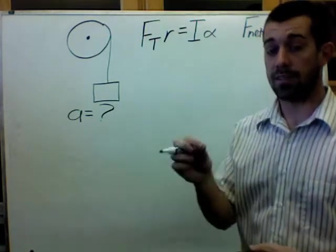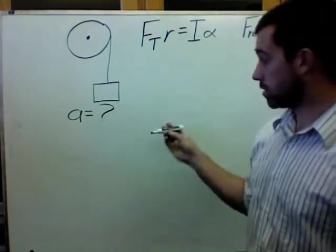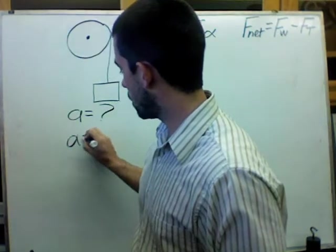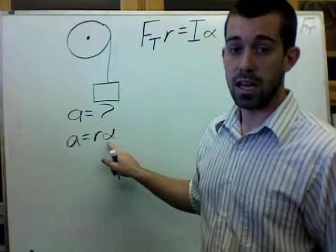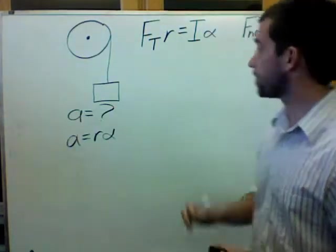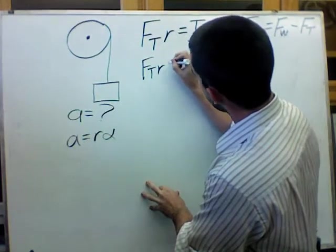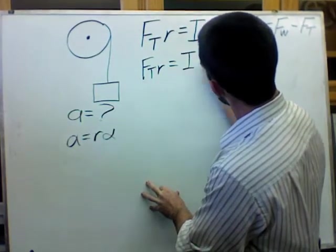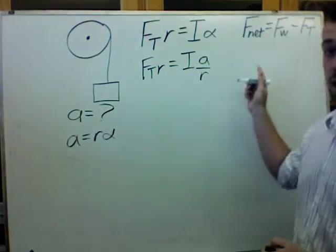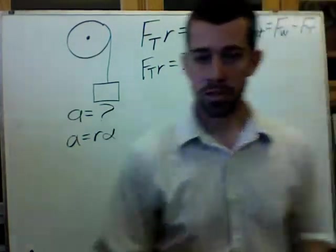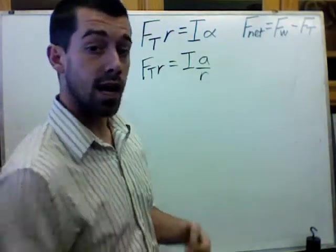And so both of these equations are actually related to acceleration, but I need to take a step before I have acceleration in them in the first place. Here I need to know that acceleration is equal to the radius times the angular acceleration, and so alpha is equal to a over r. Here I need to remember that net force equals mass times acceleration and substitute that in.